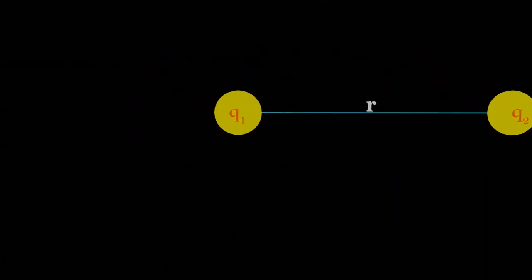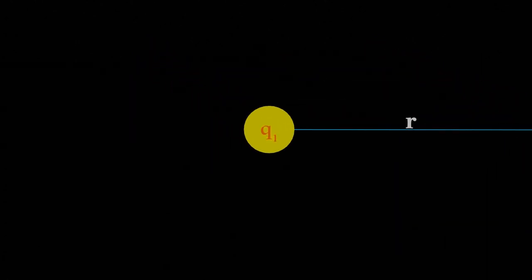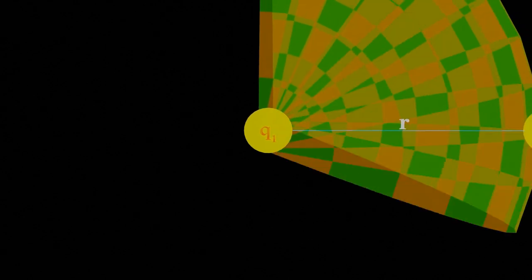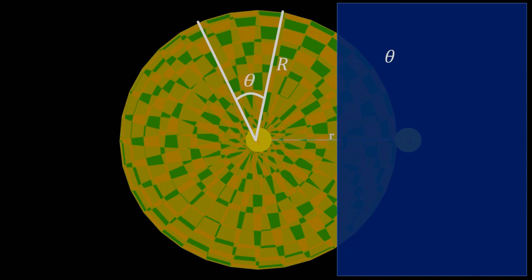Suppose we have charge Q1, whose effect if seen in a 2D environment would be in circular area. When we talk about a circle, the angle subtended at the center of the circle by an arc is equal to the arc divided by the radius.